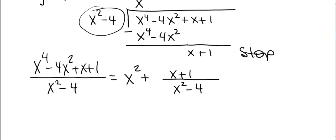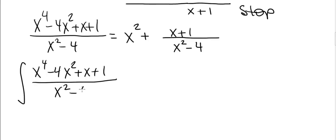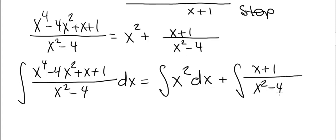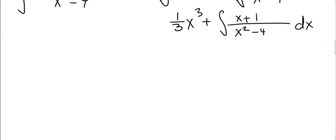When we return to the integral, this complicated integral of x to the fourth minus 4x squared plus x plus 1 divided by x squared minus 4 can now be expressed as two integrals: the first is the integral of x squared, and the second is the integral of x plus 1 divided by x squared minus 4. The first integral gives us one-third x cubed, plus the integral of x plus 1 divided by x squared minus 4.